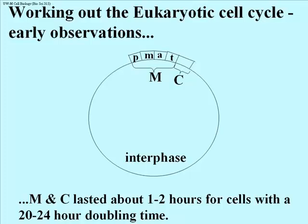Most of the rest of the time of a eukaryotic cell is spent in interphase — the phase between successive mitoses. Simple microscope observation by very patient observers showed that mitosis and cytokinesis last about 1 to 2 hours, for cells that might have a 15 to 24 hour doubling time.